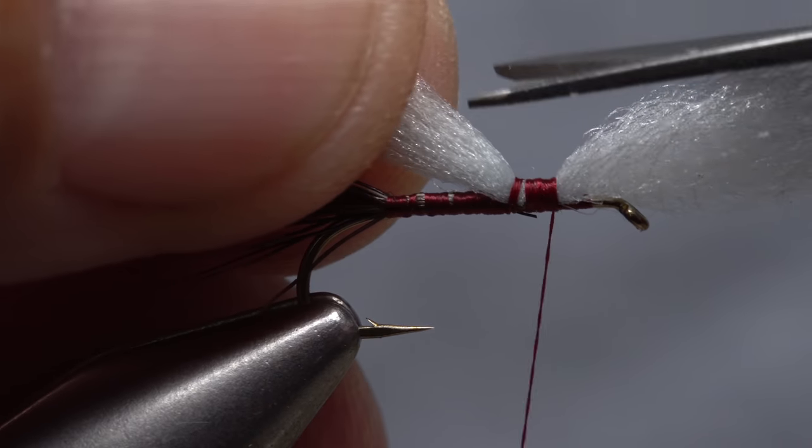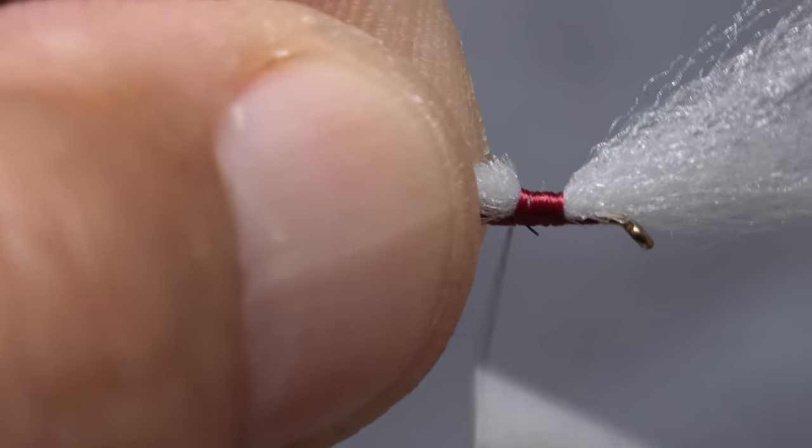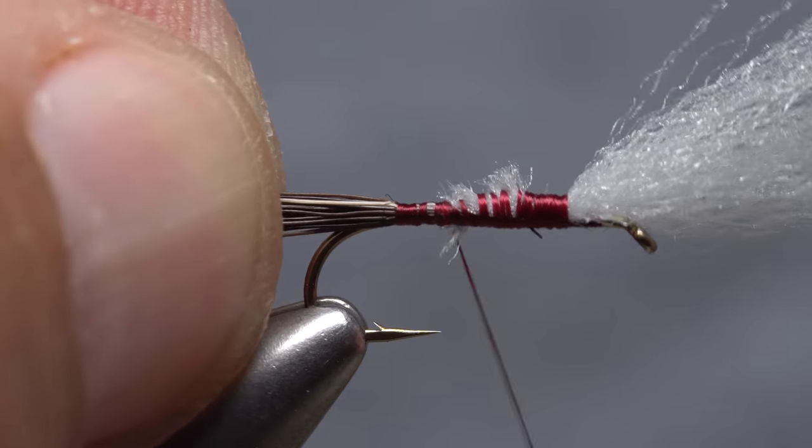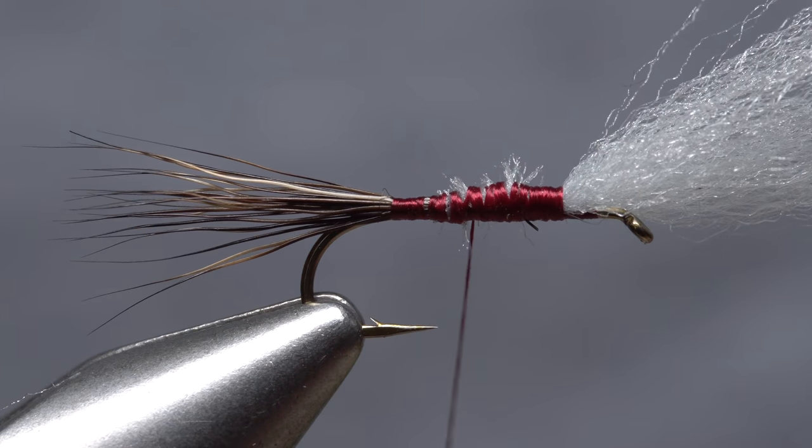Then lift the back end of the yarn up and snip it off at a shallow angle. This will allow you to take thread wraps rearward down to the hook shank, creating a nicely tapered underbody in the process.